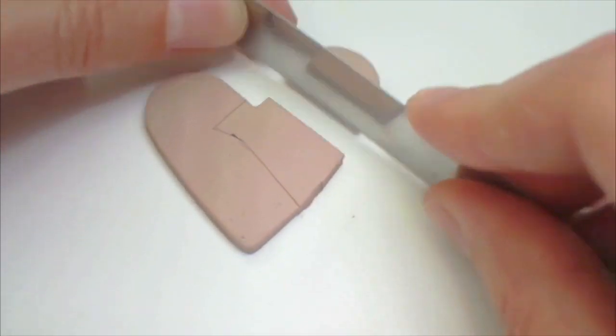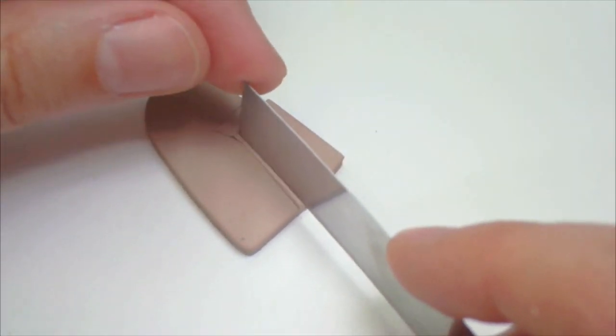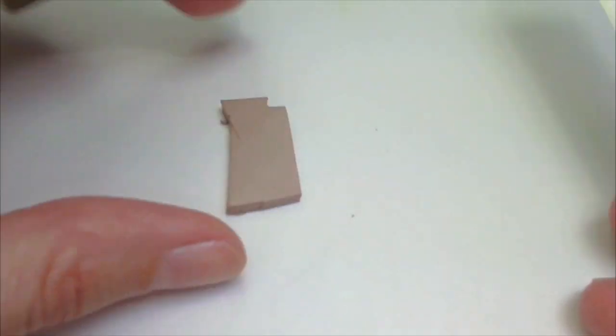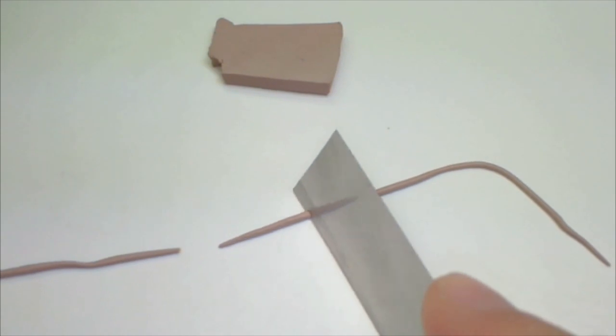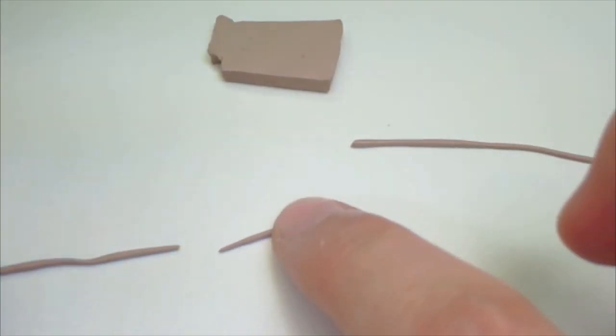Then chop that center part out using a blade tool. Roll out some more clay into a thin, small coil and chop it into different segments.